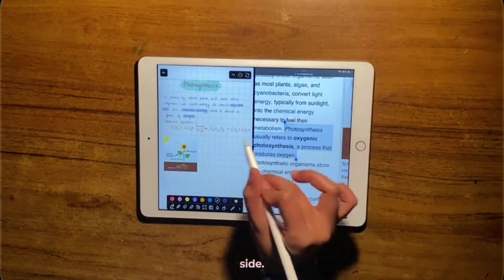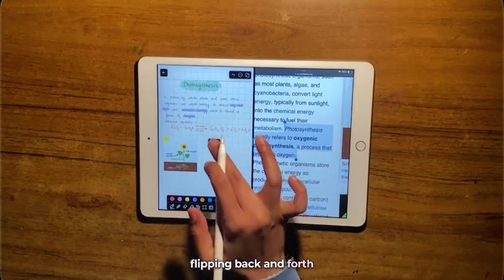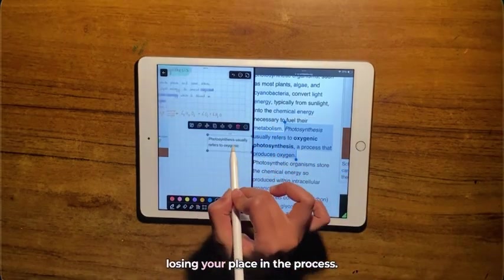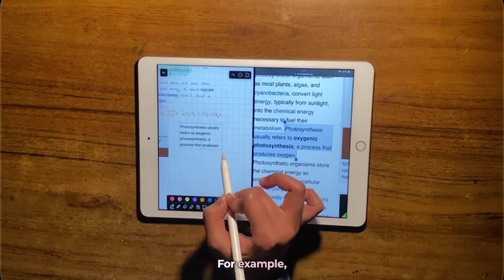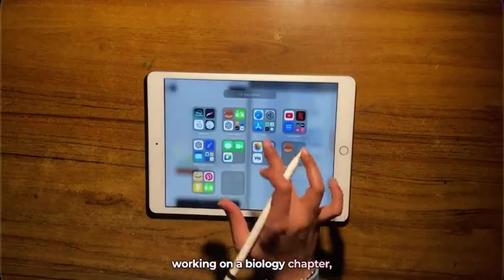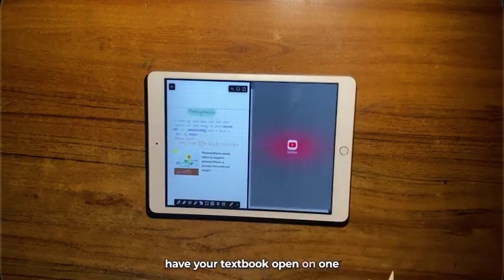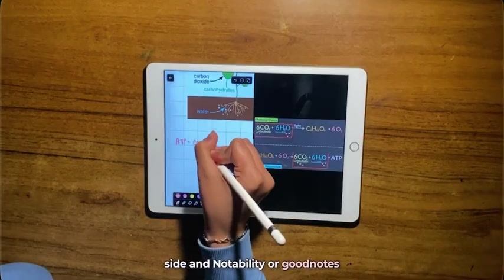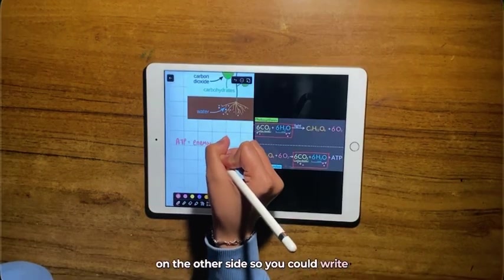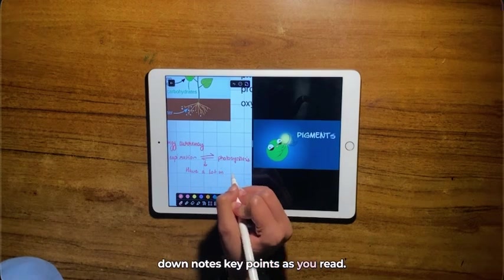For example, if you're working on a biology chapter, you could have your textbook open on one side and Notability or GoodNotes on the other side, so you can write down notes and key points as you read. It's like having a digital workspace where everything you need is right in front of you.